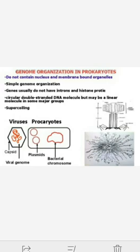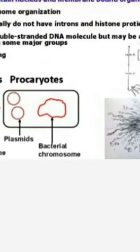Mostly in eukaryotes, linear chromosomes are present and DNA is distributed in linear form. But in prokaryotes, that is bacteria, the DNA is in circular form. In some cases it can also be linear, but mostly the bacterial genome is circular.